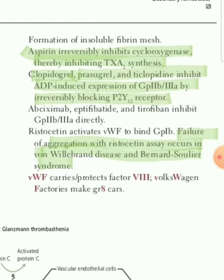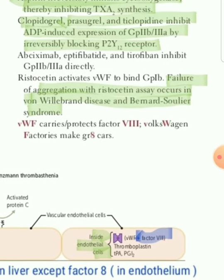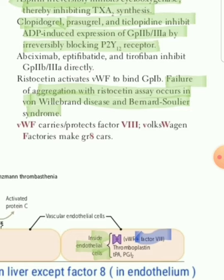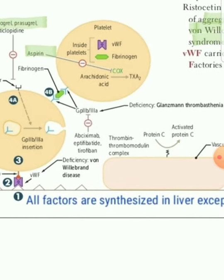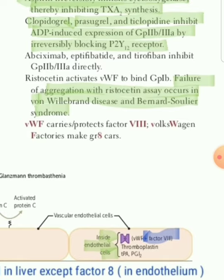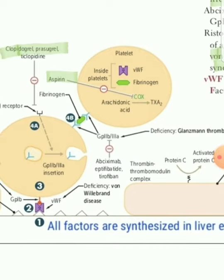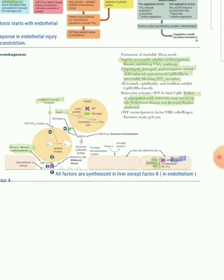Ristocetin activates von Willebrand factor to bind glycoprotein 1b. Ristocetin is important in von Willebrand disease — we measure ristocetin co-factor activity; if it is decreased, there is a problem with von Willebrand. Failure of aggregation with ristocetin occurs in both von Willebrand disease and Bernard-Soulier syndrome — these are the two important diseases. Von Willebrand and Factor 8 are stored in the endothelium and these are important points to remember.